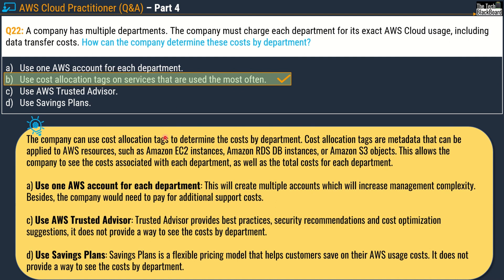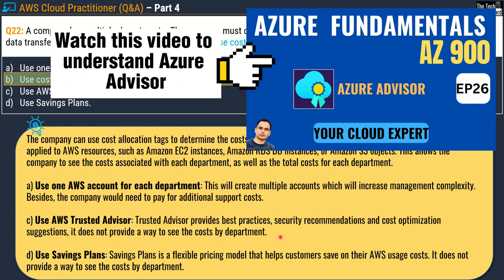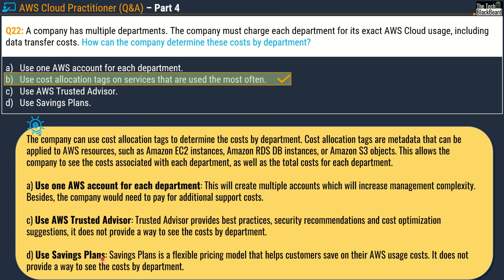Option A — one AWS account per department — was not chosen because it creates multiple accounts, increasing management complexity and additional support costs. Option C, AWS Trusted Advisor, provides best practices, security recommendations, and cost optimization suggestions but does not show cost by department. Option D, Savings Plans, is a flexible pricing model that helps save on AWS usage costs but also does not provide cost visibility by department.